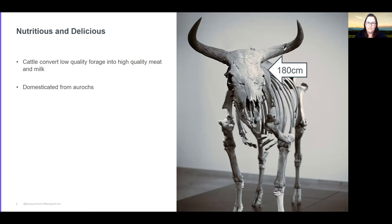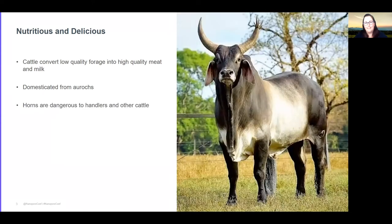This here is a picture of a skeleton of an auroch, and at the shoulder it stood almost two metres tall, so they were quite large. The thing I'd like to draw your attention to is that they were rather formidable with their very large horns on their head, and of course today if we look at domesticated cattle that trait is still there.